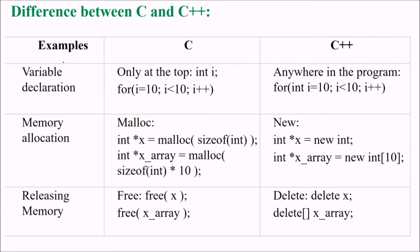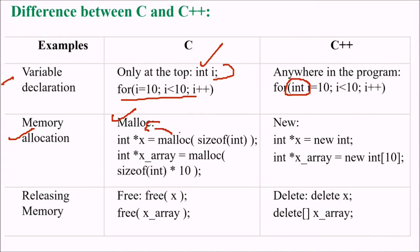Let us see a few more differences with examples. In C, variable declaration is only at the top, like int i — if you are using i, you have to declare it at the top. In C++, you can declare it anywhere in the program, even inside a for loop. For memory allocation in C, you use malloc: int *x = malloc(sizeof(int)). Note that malloc returns a void type, so you need to cast it, and you also provide the size using sizeof.